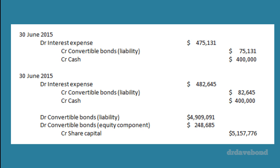We take the balance of the liability at the end of the second year and the balance sitting in the equity component — whatever these two add up to is the share capital that you credit. That successfully converts the bond: there's no liability sitting there, no more of that kind of equity component we started with — we have now created share capital.